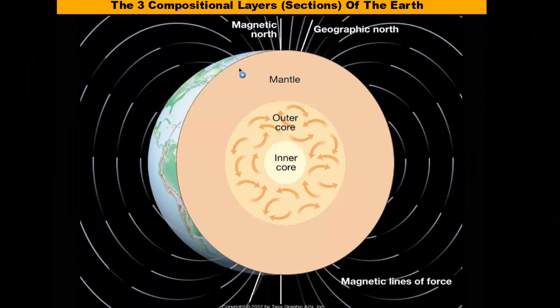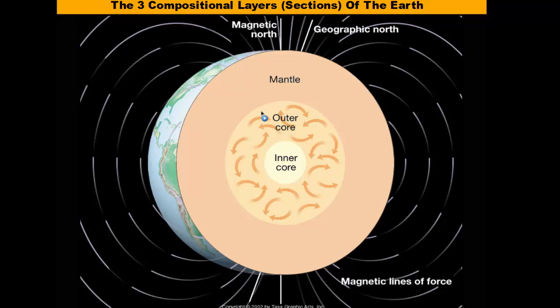Our crust is richer in silicon, which makes it less dense than the mantle, which is richer in magnesium and iron. Our outer core and inner core have the metals nickel and iron in them. That's why the layers differ in their composition — the chemicals they're made out of.